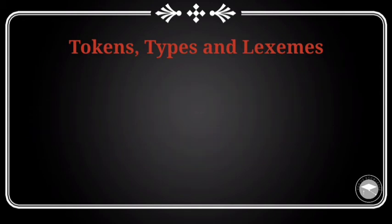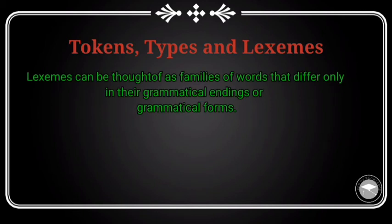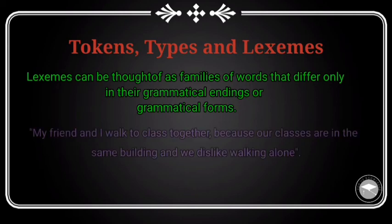النوع الثالث هو lexemes. Lexemes can be thought of as families of words that differ only in their grammatical endings or grammatical forms. فهاد الجملة عندنا 'class' و 'classes' كنحسبوهم واحد. 'Walk' و 'walking' كيتحسبوه واحد. وpronoun 'I' و 'my' كيتحسبوه واحد. وحتى 'we' و 'our' كيتحسبوه واحد.